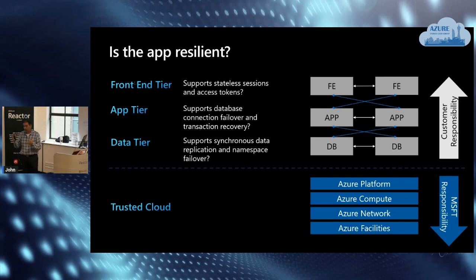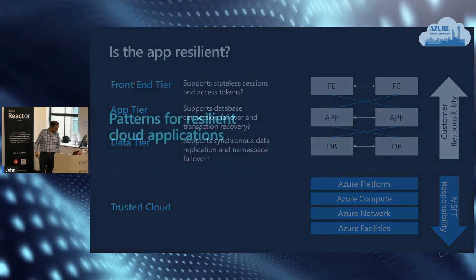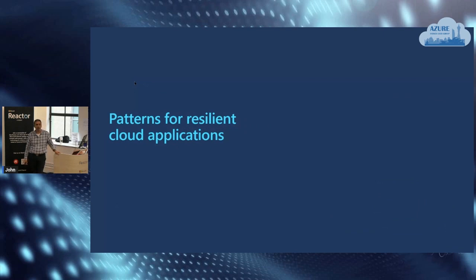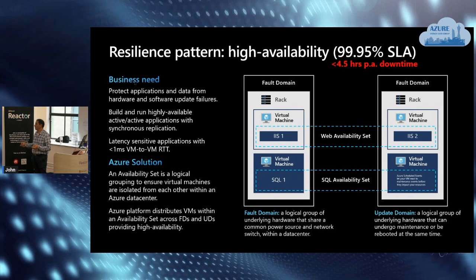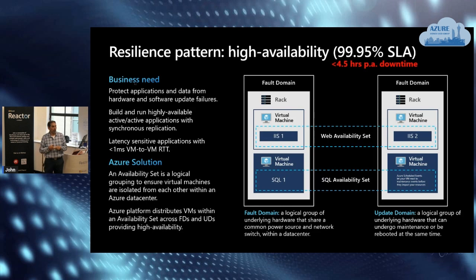Ensure your app tier and data tier can recover. If your data isn't replicating and the region goes out, you'll have to wait for the region to come back and accept data loss. Always remember: who has the responsibility and when? For reference architectures and patterns, here's one taking advantage of fault domains with an availability set, SQL Server across two VMs, and IIS — a very infrastructure-focused pattern that delivers a 99.95% SLA, meaning about four-and-a-half hours downtime per year.